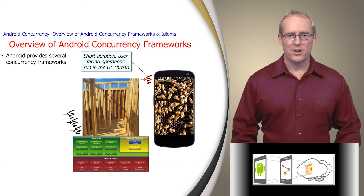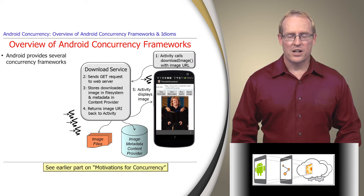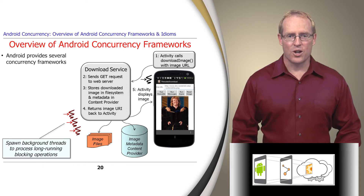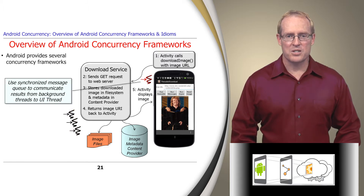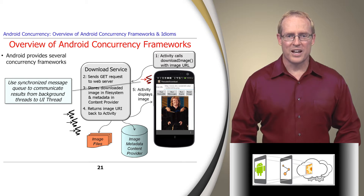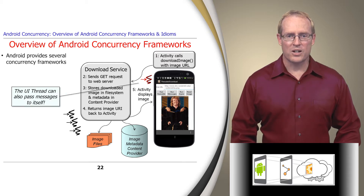For example, the image download application discussed in this video uses an Android concurrency framework to spawn background threads to process long-duration blocking operations, such as downloading large images from remote servers. It then uses a synchronized message queue provided by the framework to communicate results from the background threads to the user interface thread, which then displays the image to the user's screen. The user interface thread can also use this framework to pass messages to itself, deferring certain processing until a designated period of time elapses.